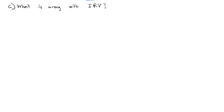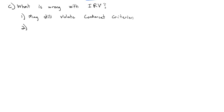What is wrong with instant runoff voting — IRV for short? Well, there are a couple of problems. One is it may still violate the Condorcet criterion. We saw that with plurality voting: just because one person wins in head-to-head matchups does not mean that person is going to win in the overall election.